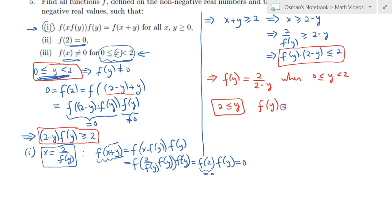So f of y is simply equal to, because y is greater than or equal to 2, I can write it as y minus 2 plus 2. And that thing is equal to, applying the definition, obviously, f of y minus 2 times f of 2 times f of 2 again. But f of 2 is 0, so that whole thing will become 0, and we are done.